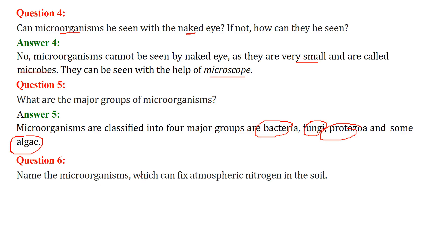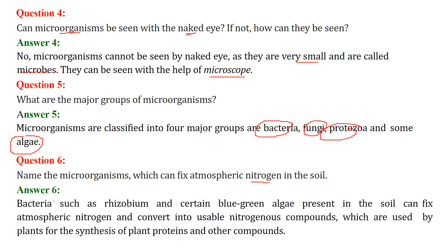Name the microorganisms which can fix atmospheric nitrogen in the soil. To fix atmospheric nitrogen in soil, we have Rhizobium, and also some blue-green algae that are present in the soil. These directly take atmospheric nitrogen, convert it, and make it into usable nitrogenous compounds that plants can easily use to build proteins and other compounds.